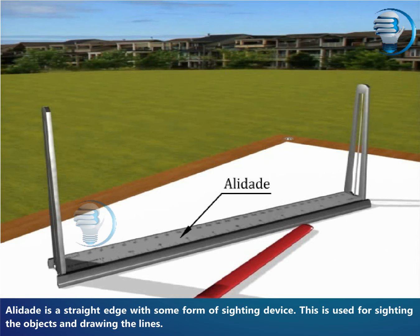Alidade is a straight edge with some form of sighting device. This is used for sighting the objects and drawing the lines of sight.